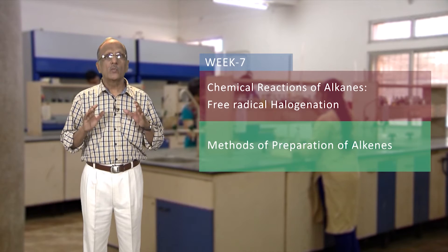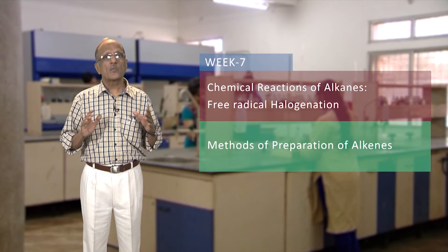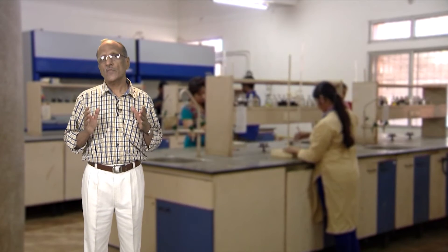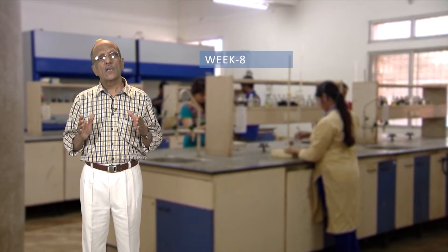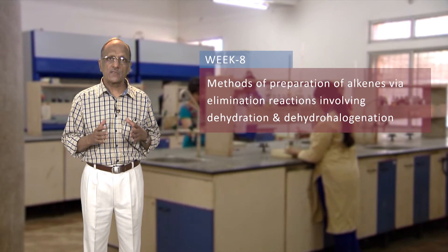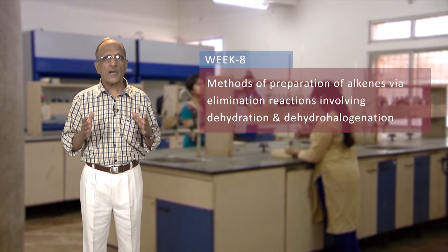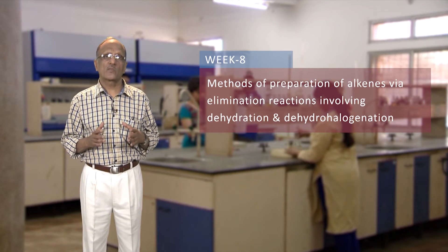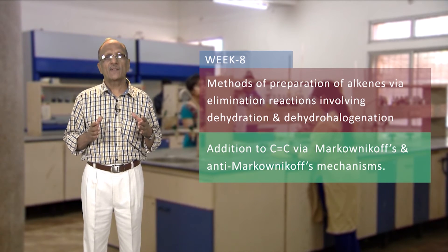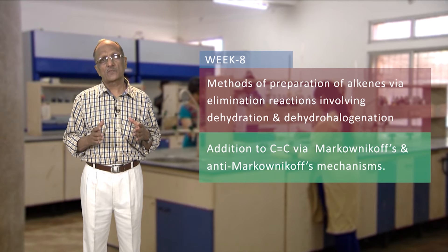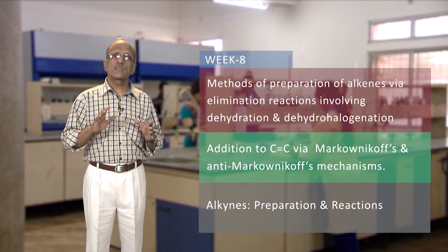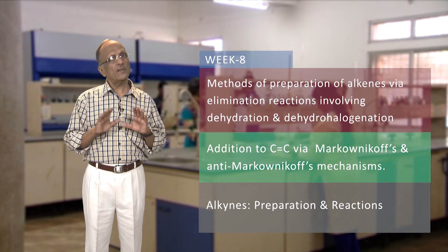After that, we will move on to alkenes by understanding their preparation methods and physical properties. In the last, eighth week, we will discuss more methods of preparation of alkenes via elimination reactions involving dehydration and dehydrohalogenation, followed by addition to carbon-carbon double bond via Markovnikov's and anti-Markovnikov's mechanisms. On the last day of the eighth week, we will take up alkynes by discussing their preparation and reactions.